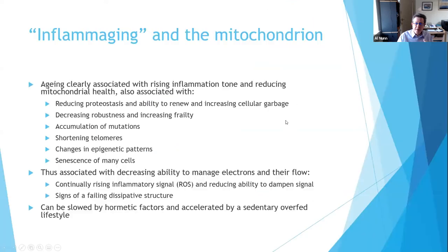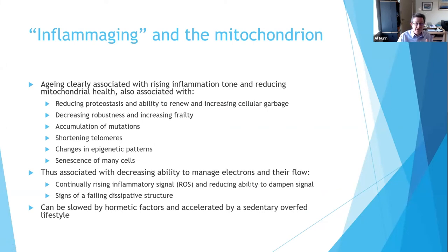To summarise this bit: inflammation and the mitochondria are very closely related, and there are all sorts of things we can associate with this process — ranging from proteostasis, accumulation of mutations, and telomere shortening, through epigenetics and senescence. We know that exercise can reduce senescence — the buildup of functional but inflamed cells that just sit there in a tissue doing nothing. Things like exercise and calorie restriction can start to remove them. Basically, it's about the ability to flow electrons safely. If they fail, this could be a sign of a failing dissipative structure, which brings it back to thermodynamics.